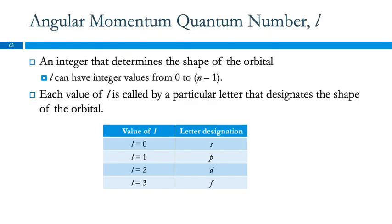These are negative numbers, so as the energy is getting higher it's getting closer to zero. At some point the electron would have left the atom — it would no longer be attracted to the nucleus. The energy is negative because by interacting with the nucleus, the electron is stabilized.